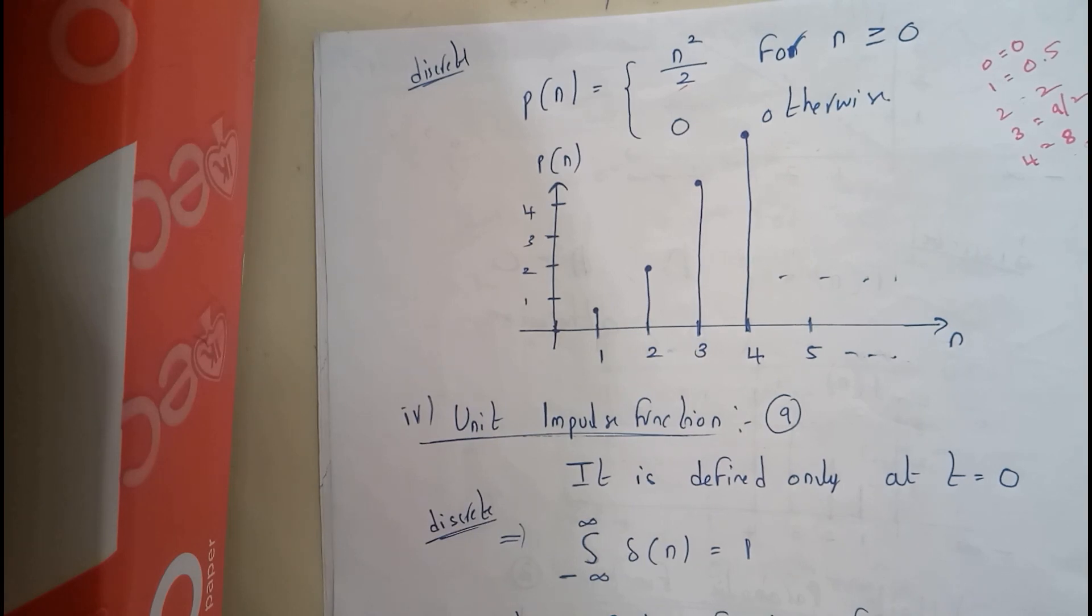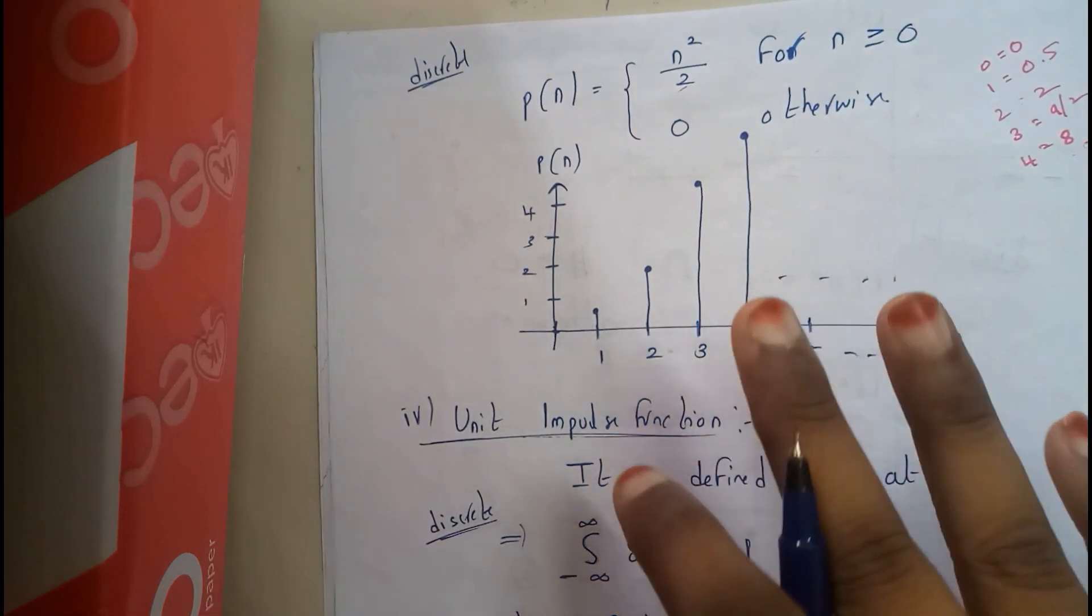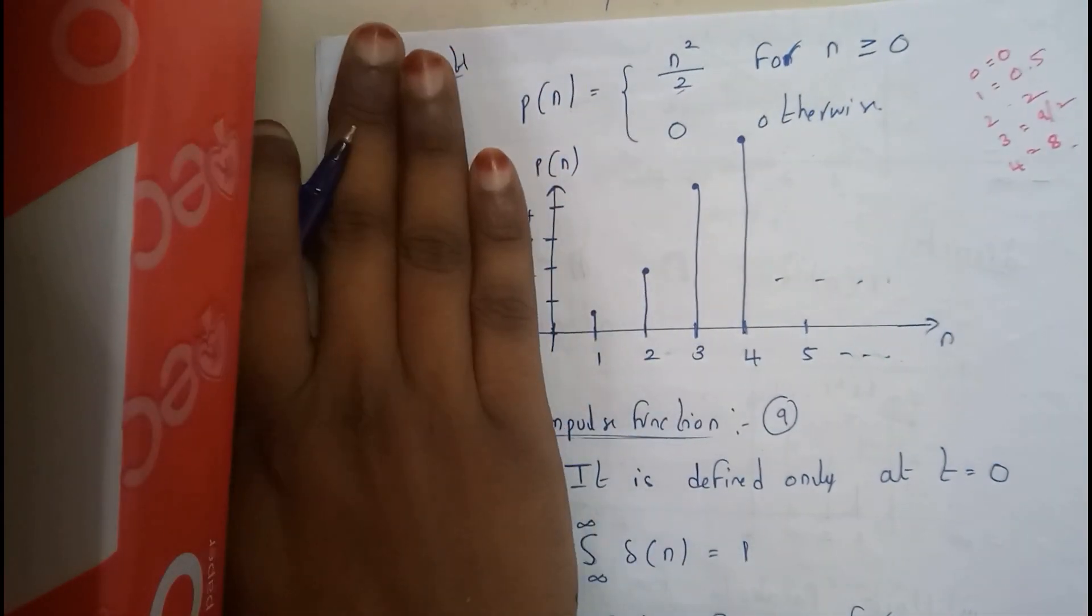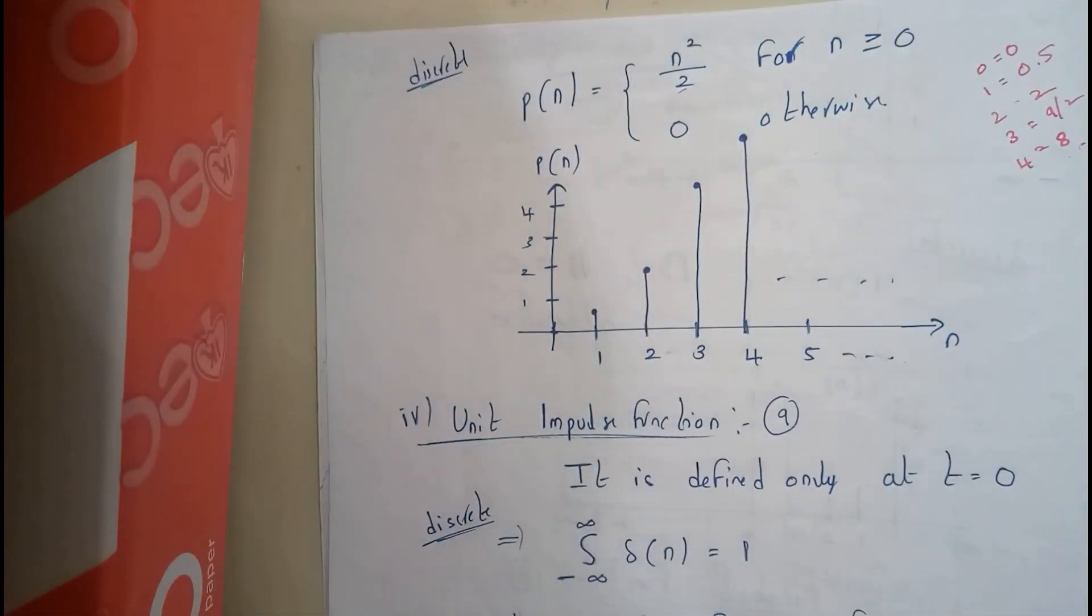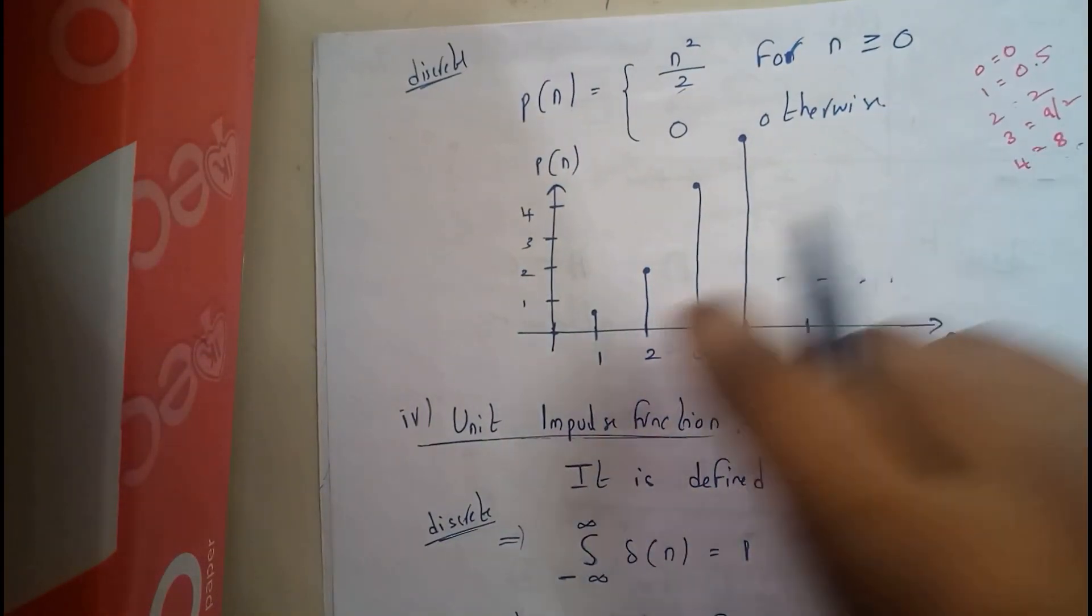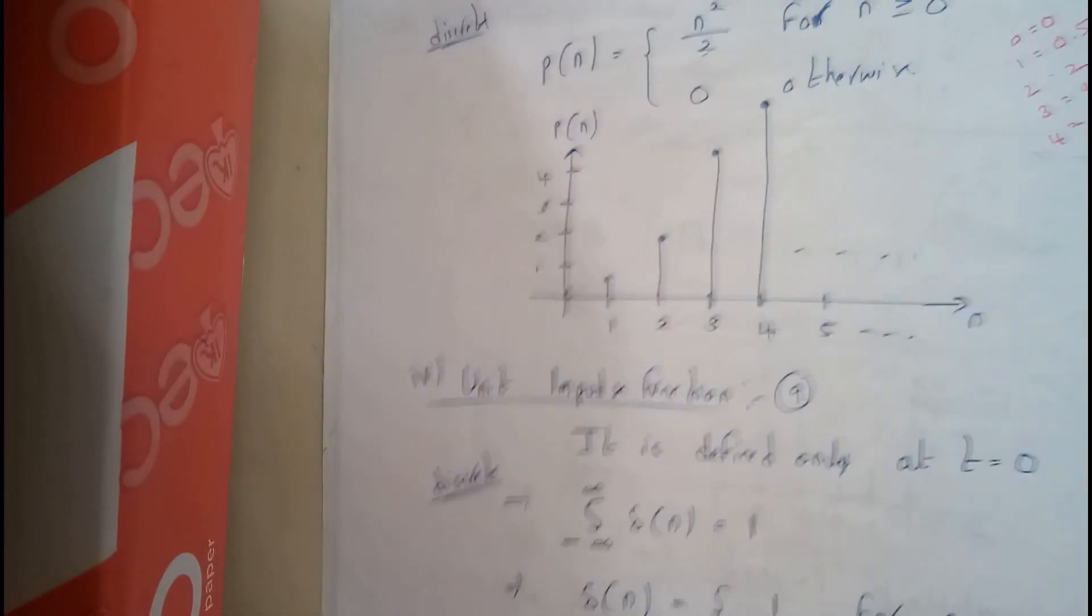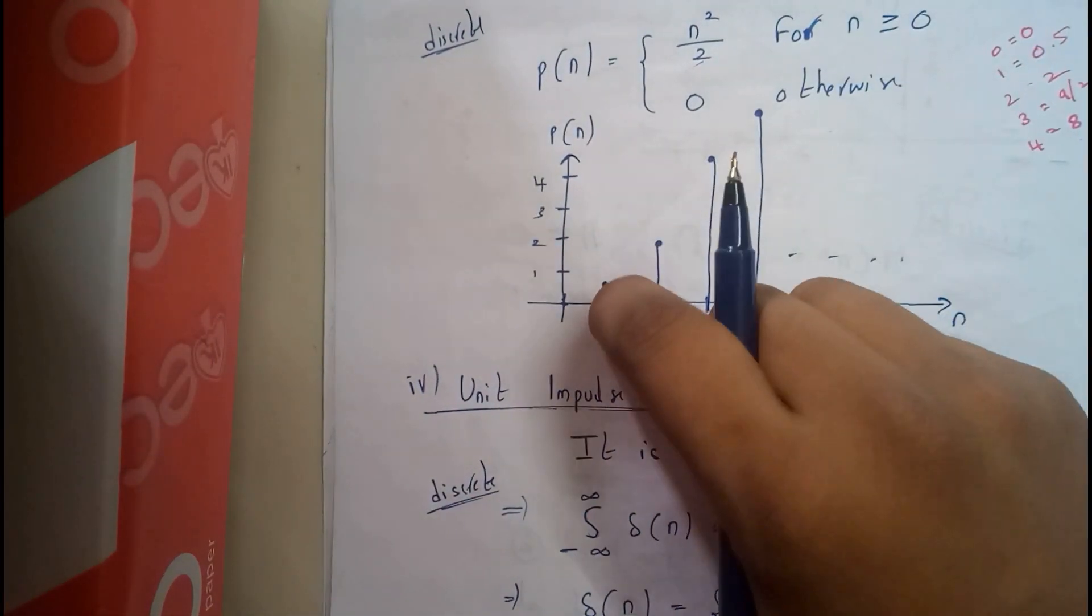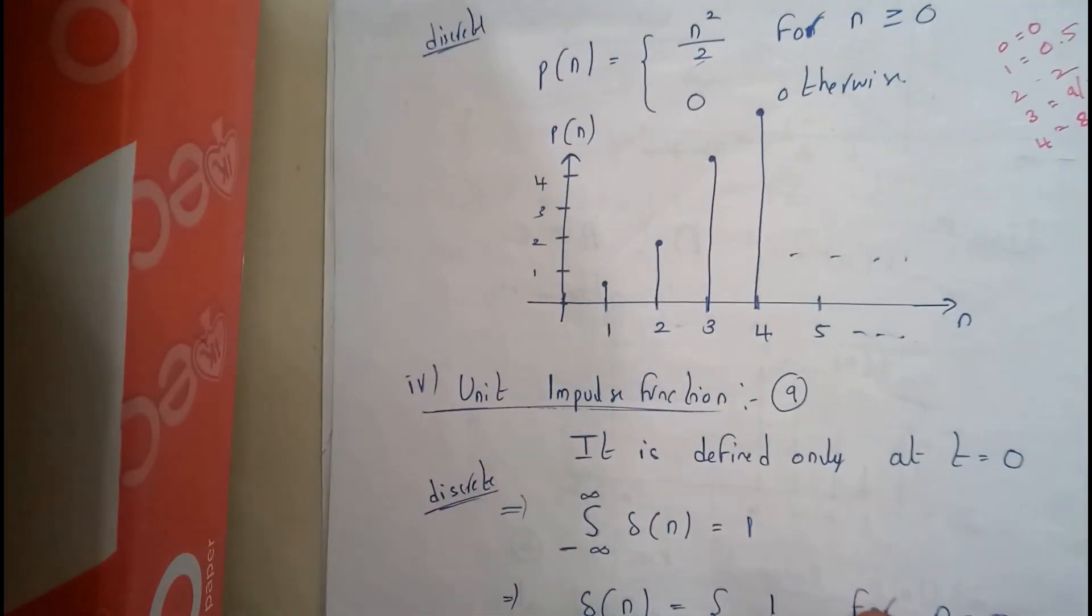If you observe, how I am remembering all these things is that unit means it has no negative values. All the negative values will be 0s. If it is a unit step, it has a single step. If it is a unit parabola, it will be parabola. If it is a unit ramp function, it increases accordingly with the value of t or n equally.